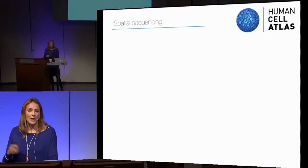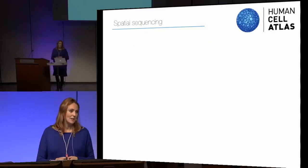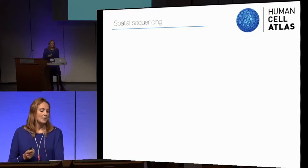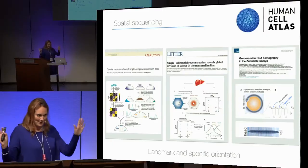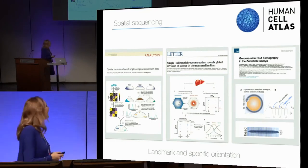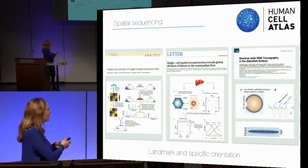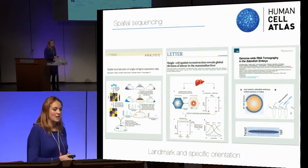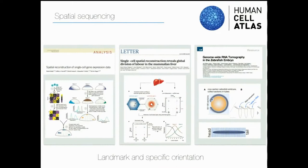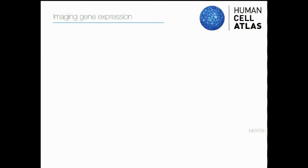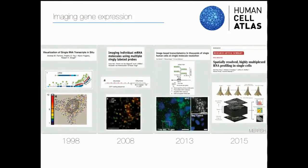Now, going back to the real world, I'll try to give you an overview of what different spatial methods have been used in the past to look at both gene expression and protein. I will go very fast on gene expression and focus mainly on protein, which is what we do. There are many spatial sequencing methods, and most of you are the ones who made this work — you always need landmarks or specific orientation, and it's not always one-to-one applicable to every system.